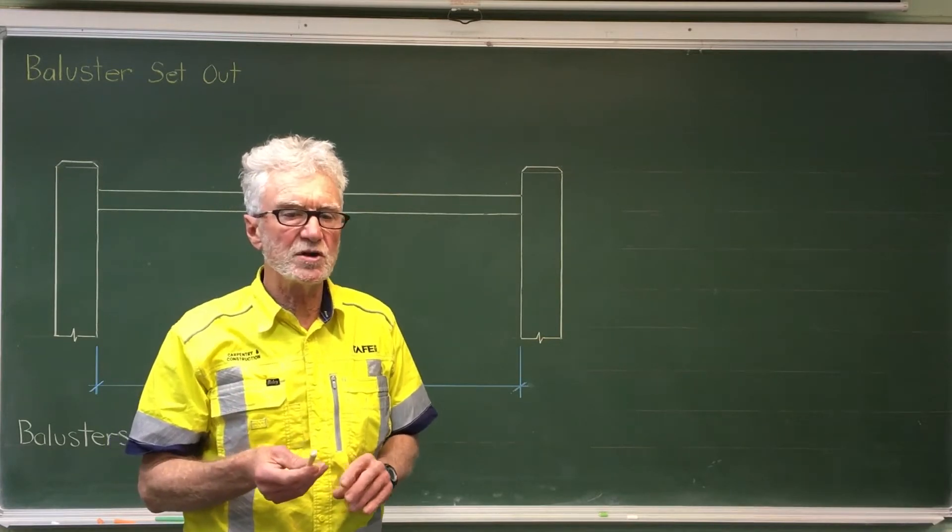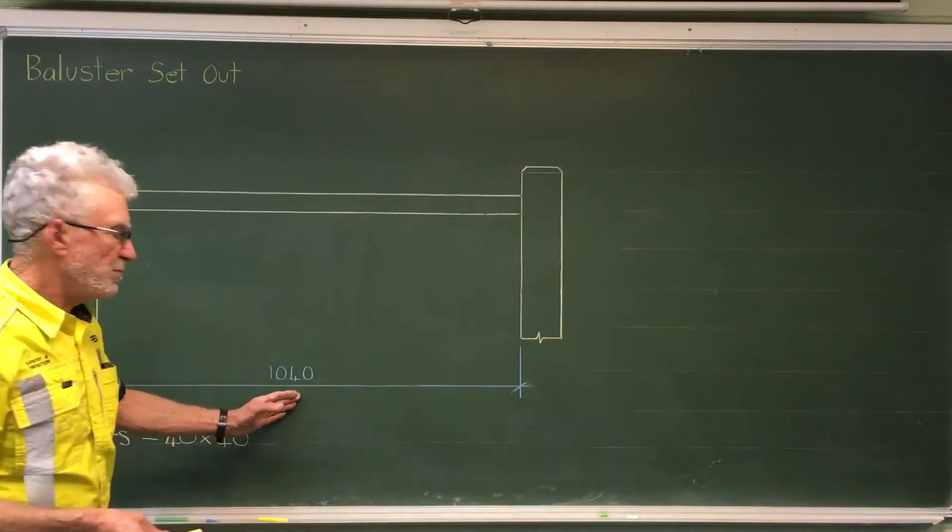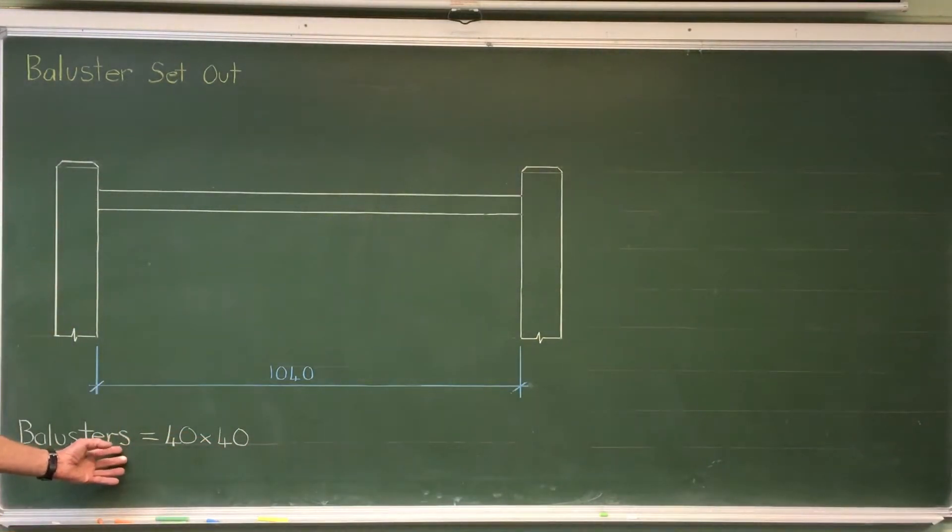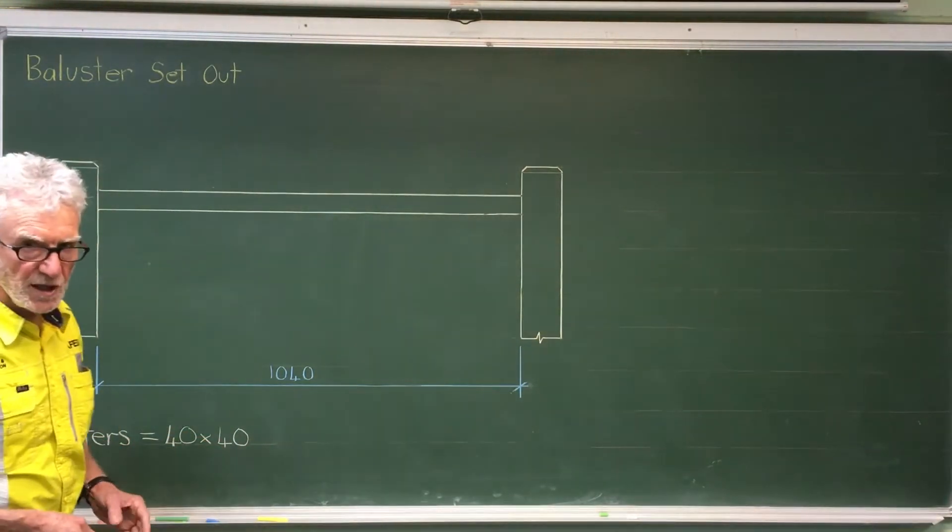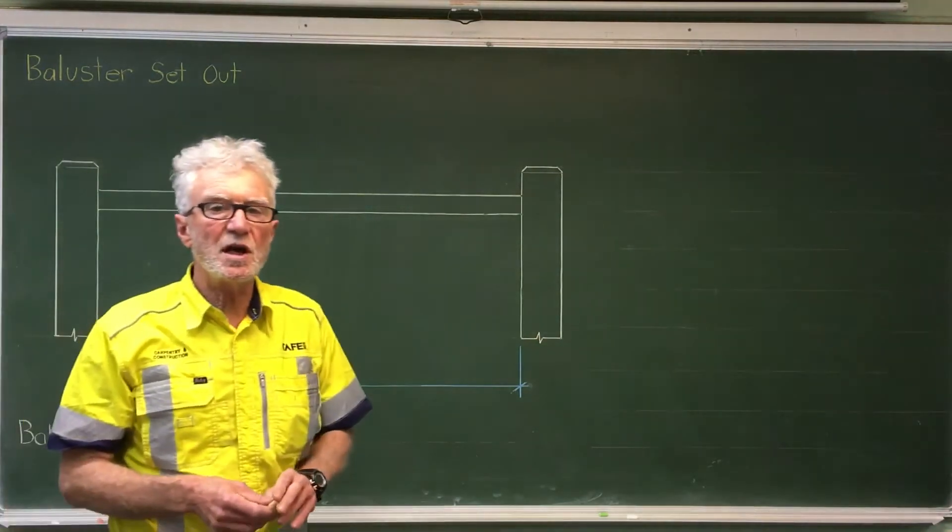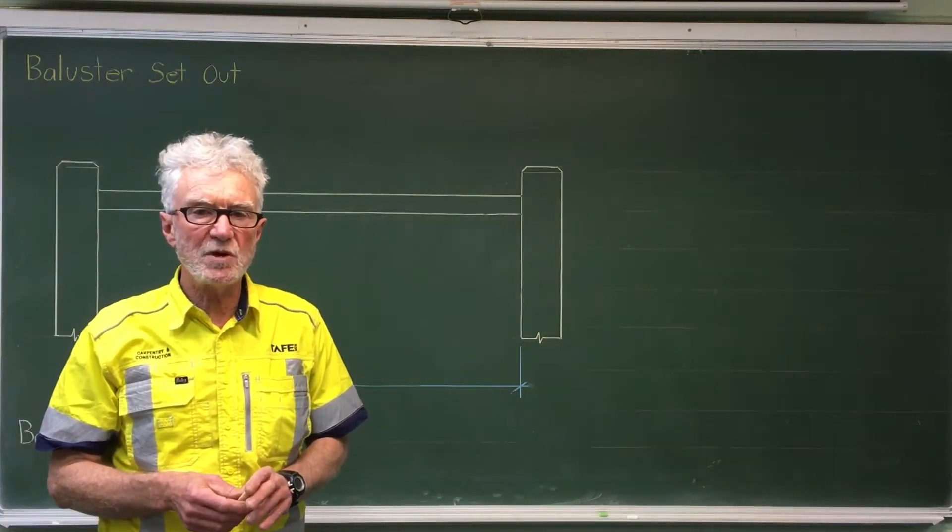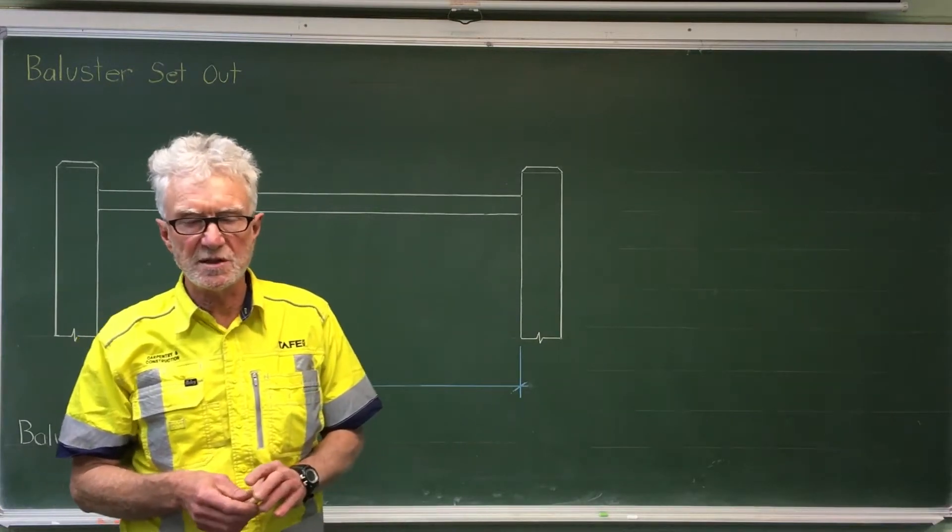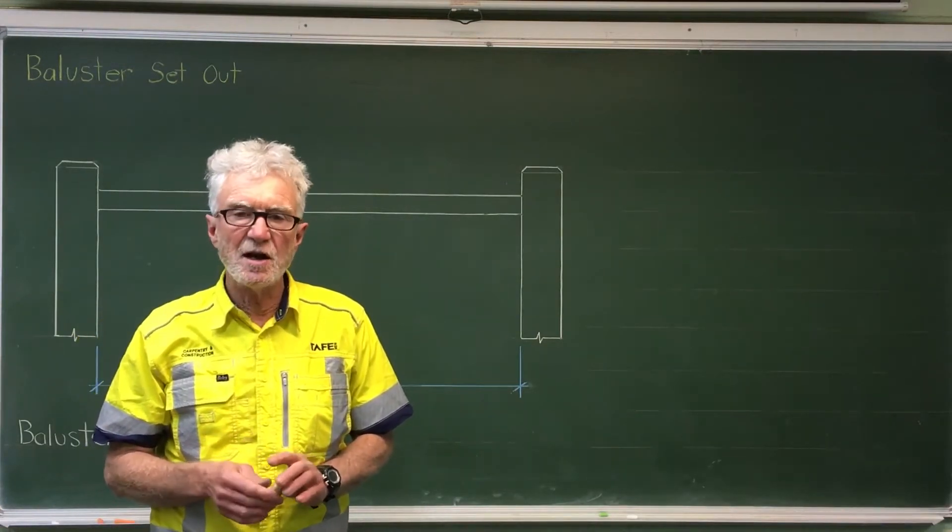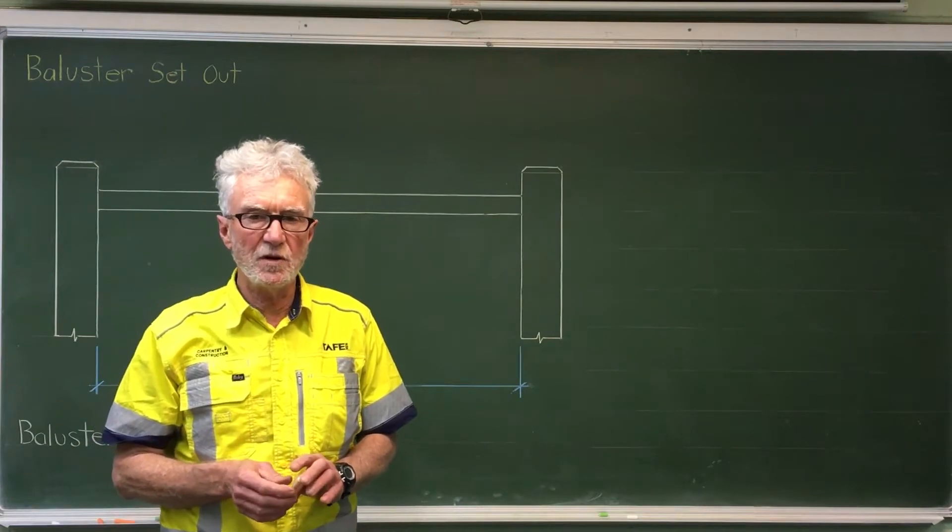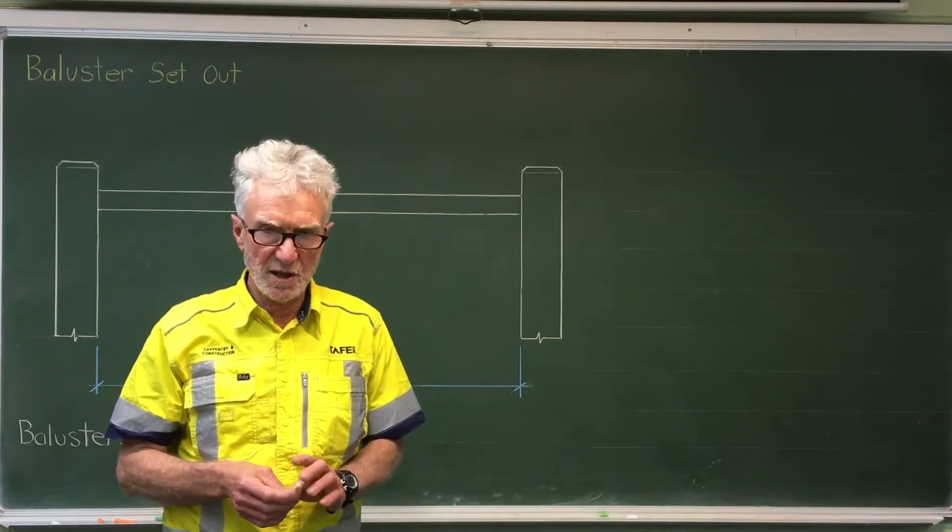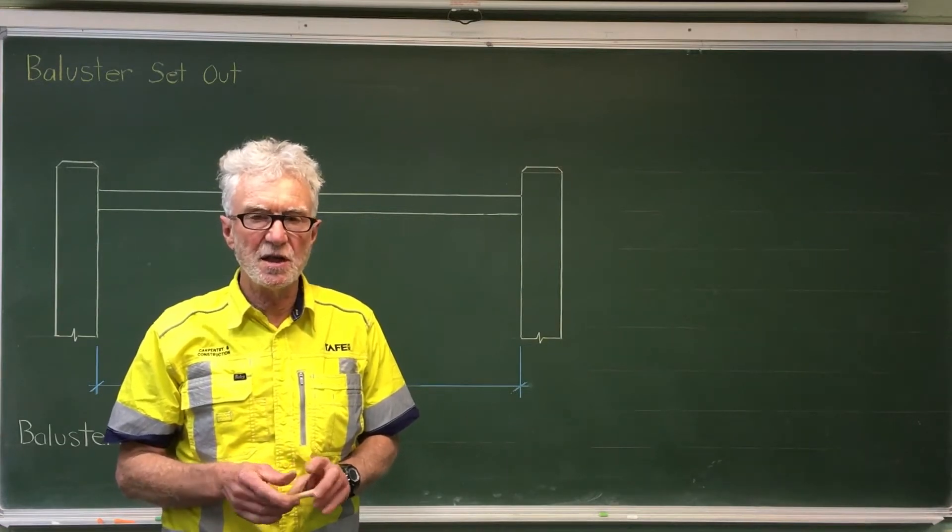Let's look at what we've got first. We've got an opening in between the two newels of 1040. We're told the balusters are 40 by 40. Now the Building Code of Australia says that the maximum gap between two balusters is 125 millimetres.